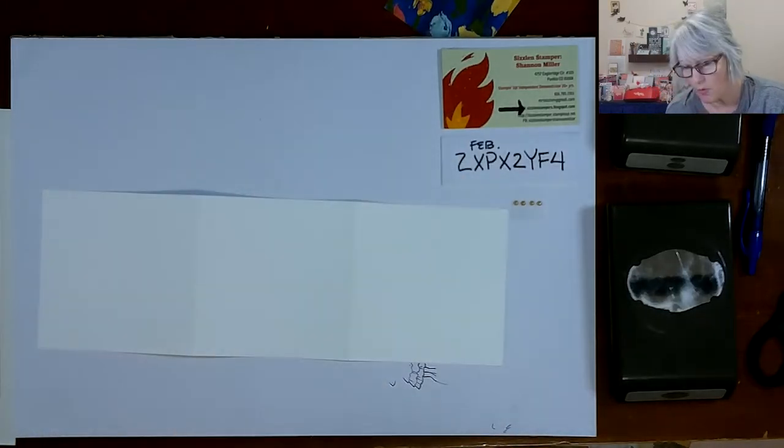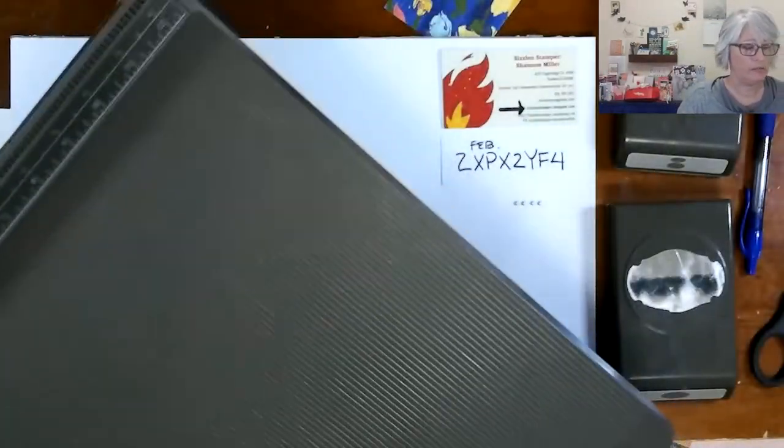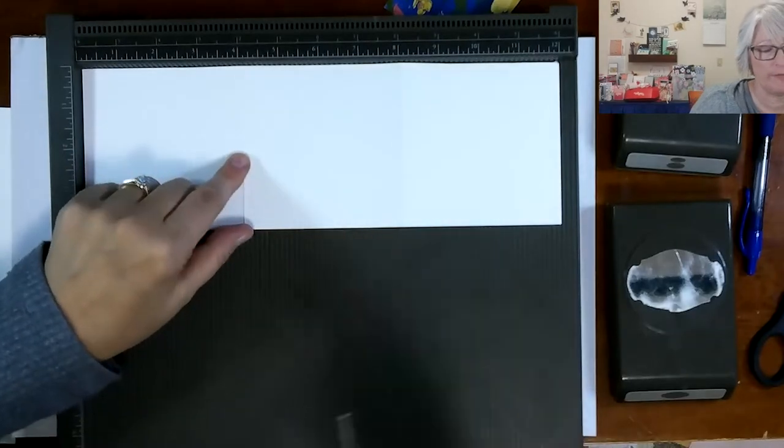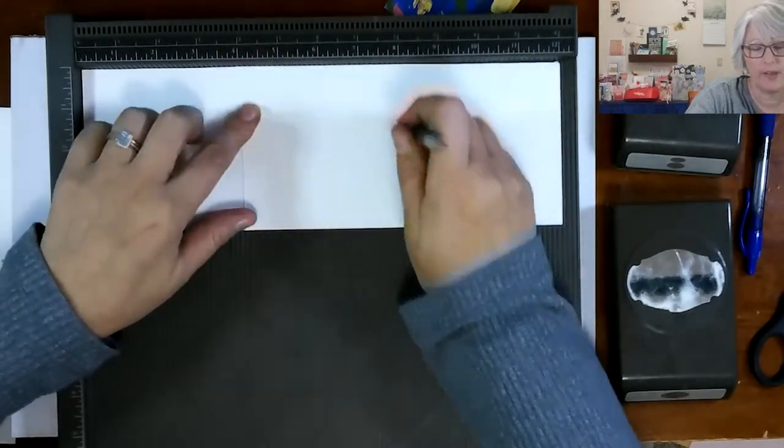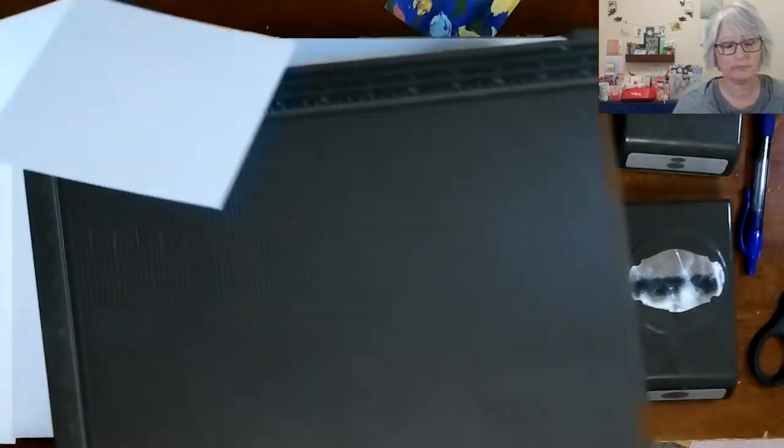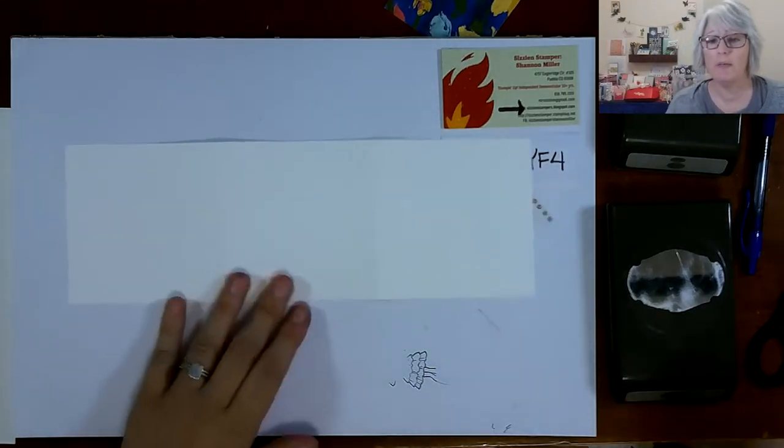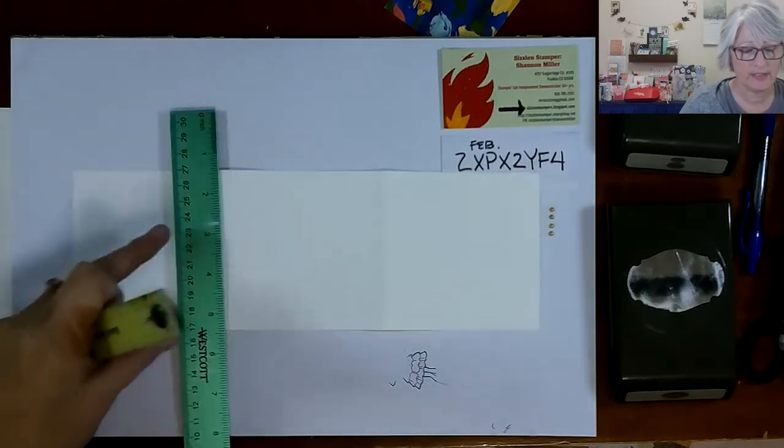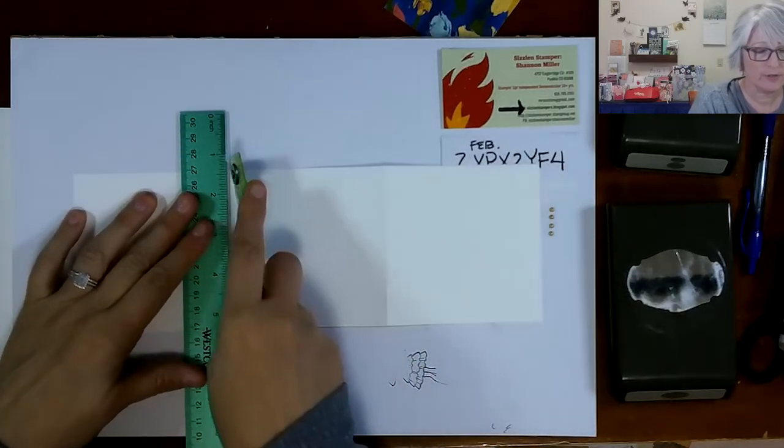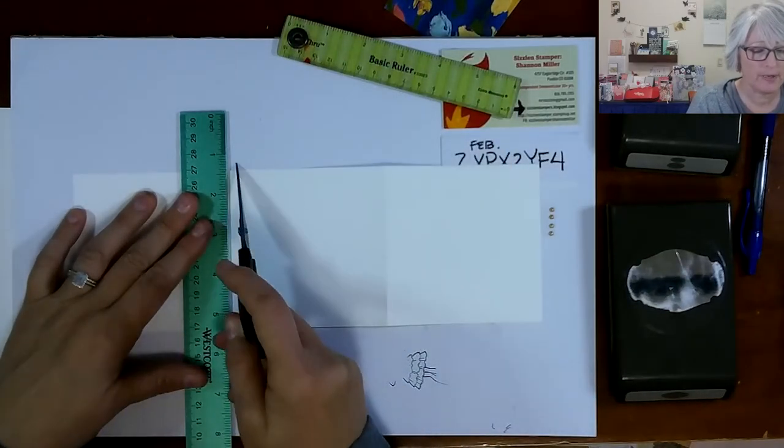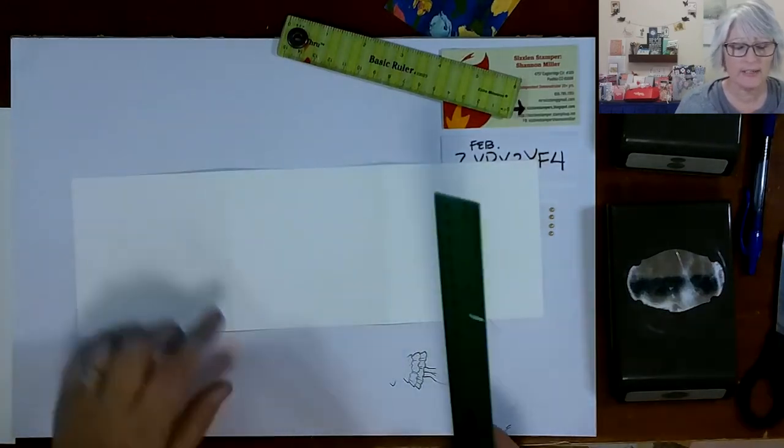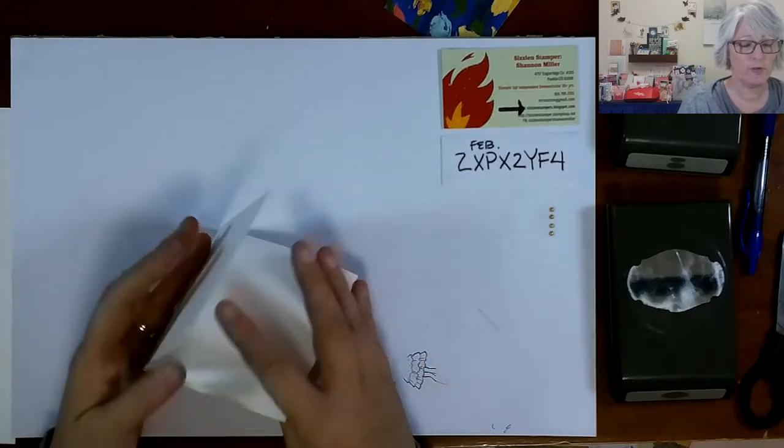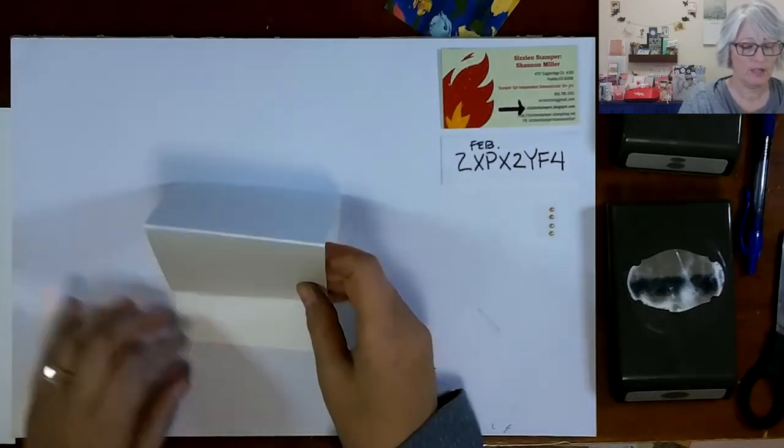So the first thing you're going to do is score your paper. And again, this is 12 inches long by four inches wide. And we want to end up with three panels that are four inches. So you're going to score it at four and at eight. If you do not have a scoring tool or a scoring blade, you can make a little pencil mark at four and eight, and then take your ruler and the back of a pair of scissors will work. Worst case scenario, make a mark and fold it by hand as best as you can. So now you have, you folded those scoring up really well.